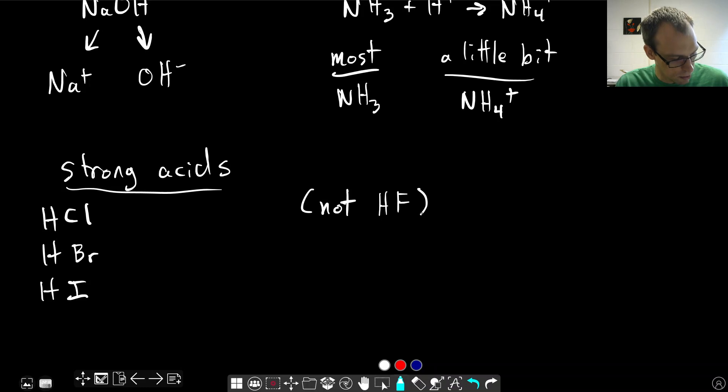And we can add, let me make sure I'm not forgetting any here, there's a couple extra ones that we can add to this. Nitric acid, HNO3, is also a strong acid that will completely dissociate. Sulfuric acid, H2SO4, is a strong acid. And H2SO4 is a little bit special in that it actually has two protons that can lose. The first proton, it's a strong acid.